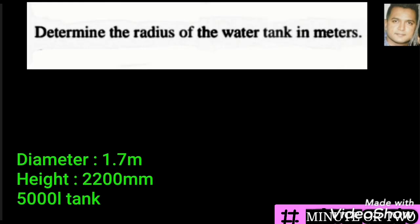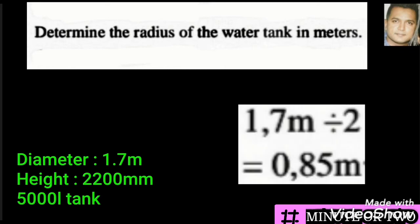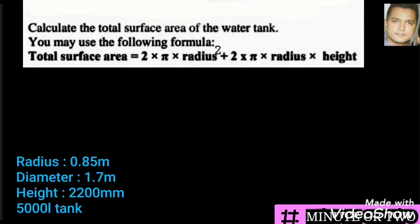Determine the radius of the water tank in meters. It is important to know that the radius is half of the diameter. So we take the diameter and divide it by 2: 1.7 meters divided by 2 gives us 0.85 meters.